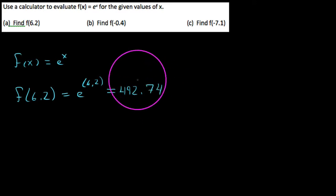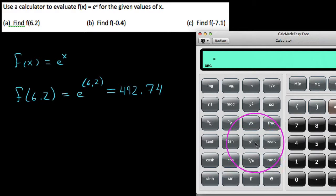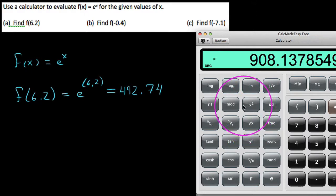So we get approximately 492.74. I just want to point one thing out, this is 2.718, so approximately 3. If I were to take 3 to the 6.2, I should get an answer that's slightly larger. 3 to the power of 6.2 is many times larger, but you notice how the base has a very large effect on this.